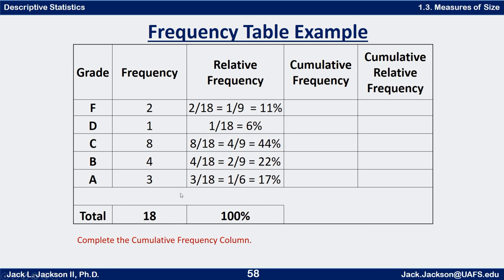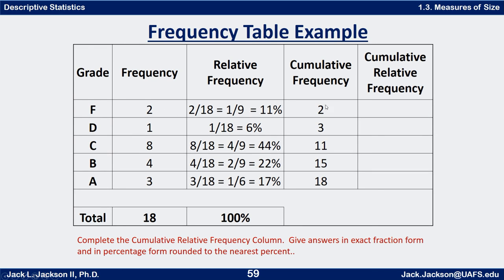Relative frequency is just a percentage or fraction of the total. Cumulative frequency is accumulating this — so the first value is two, then the next is three (two plus one), and so forth. See if you can fill out the cumulative frequency column now. Press pause. The first value is just the same as the frequency. We get three by adding two and one; we get eleven by adding two, one, and eight. To get fifteen we add eleven and four, then add three more to get eighteen. We could also get eighteen by just adding them all up.